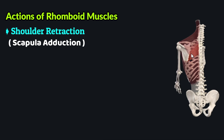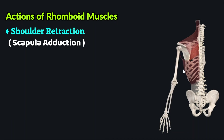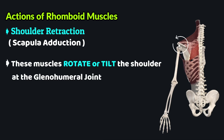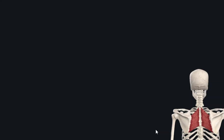Another action performed by the rhomboid muscles is that they tilt or rotate the shoulder at the glenohumeral joint. This action is mainly performed by the rhomboid major muscle, because the inferior fibers of the rhomboid major insert over the inferior angle of the scapula. As these inferior fibers contract, they draw the scapula posteromedially and tilt the scapula, resulting in lateral rotation of the glenohumeral joint.